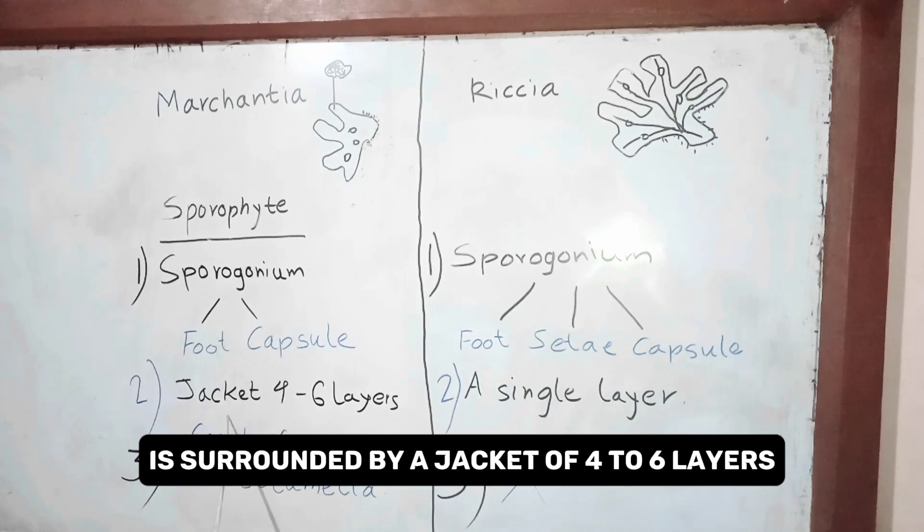The sporogonium of Marcensia is surrounded by a jacket of four to six layers, whereas the sporogonium of Rhysia is surrounded by a jacket of a single layer.